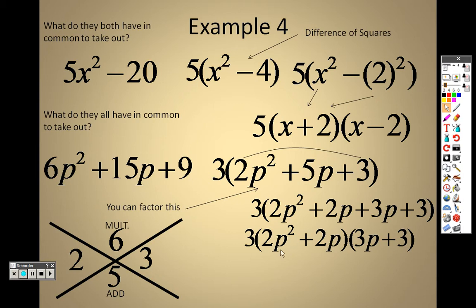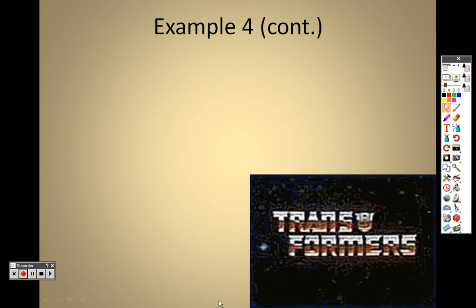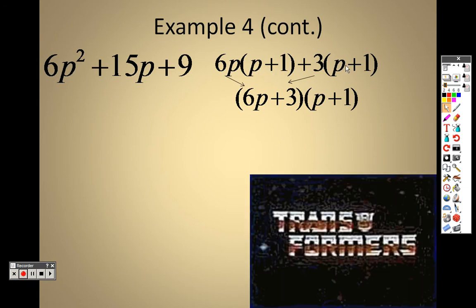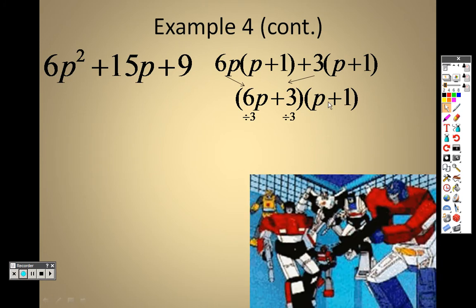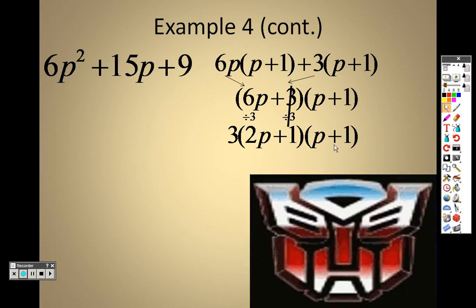Which means I can factor each of those by grouping, and each of these has a 2p that I can take out of both of them, leave me with 2p and p plus 1 on the inside. I can take a 3 out of this, and when I do that, that leaves me with a p plus 1. So I can take these two, combine them together, and get 2p plus 1 and p plus 1. And I realize in here that they both have a 3 in common, so I can take a 3 out, and I get 3 times 2p plus 1 and p plus 1.